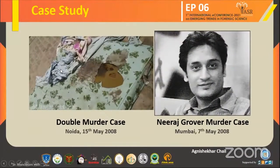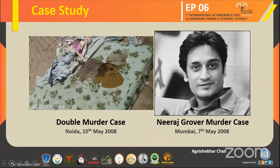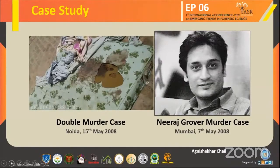I'll now give reference to two cases, briefing the scene in short. The first is a double murder case from Noida in 2008, popularly known as the Aarushi Talwar murder case — one of the most cited cases in trials by media. The double homicide involved 13-year-old Aarushi Talwar and 45-year-old domestic help Mr. Hemraj. The murder was committed between 12am and 1am on 16th May 2008, determined by autopsy findings.